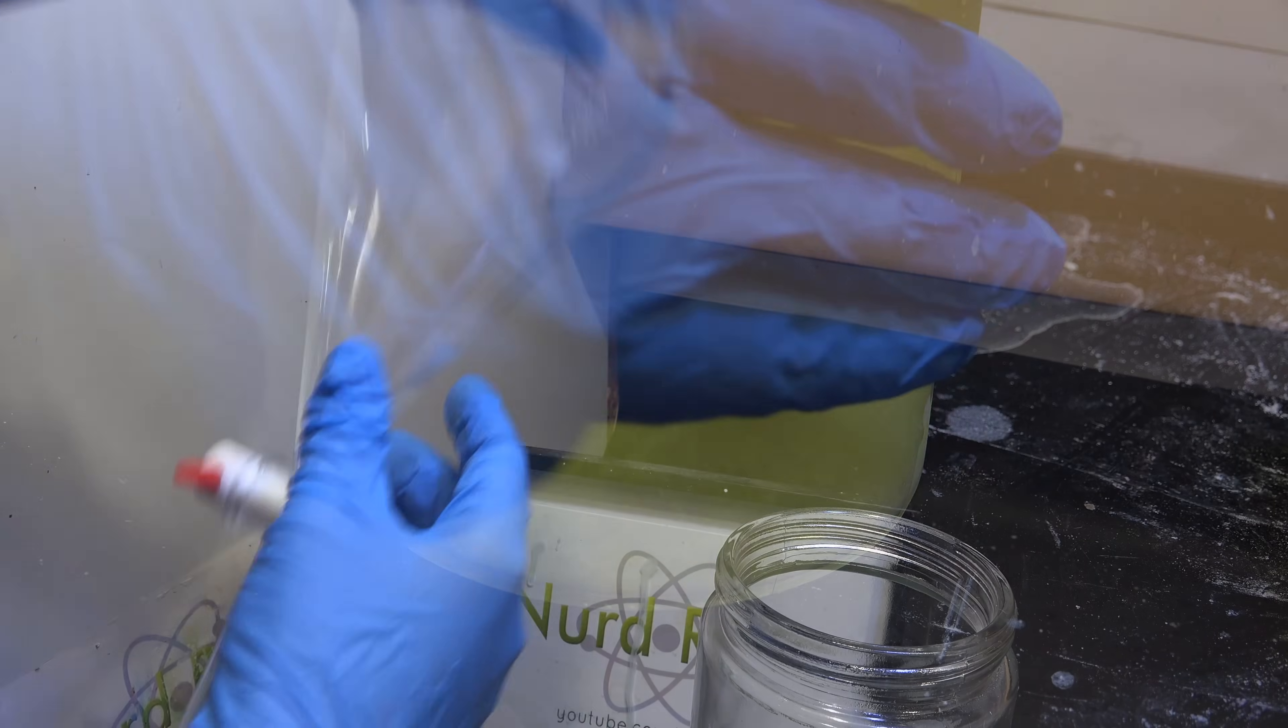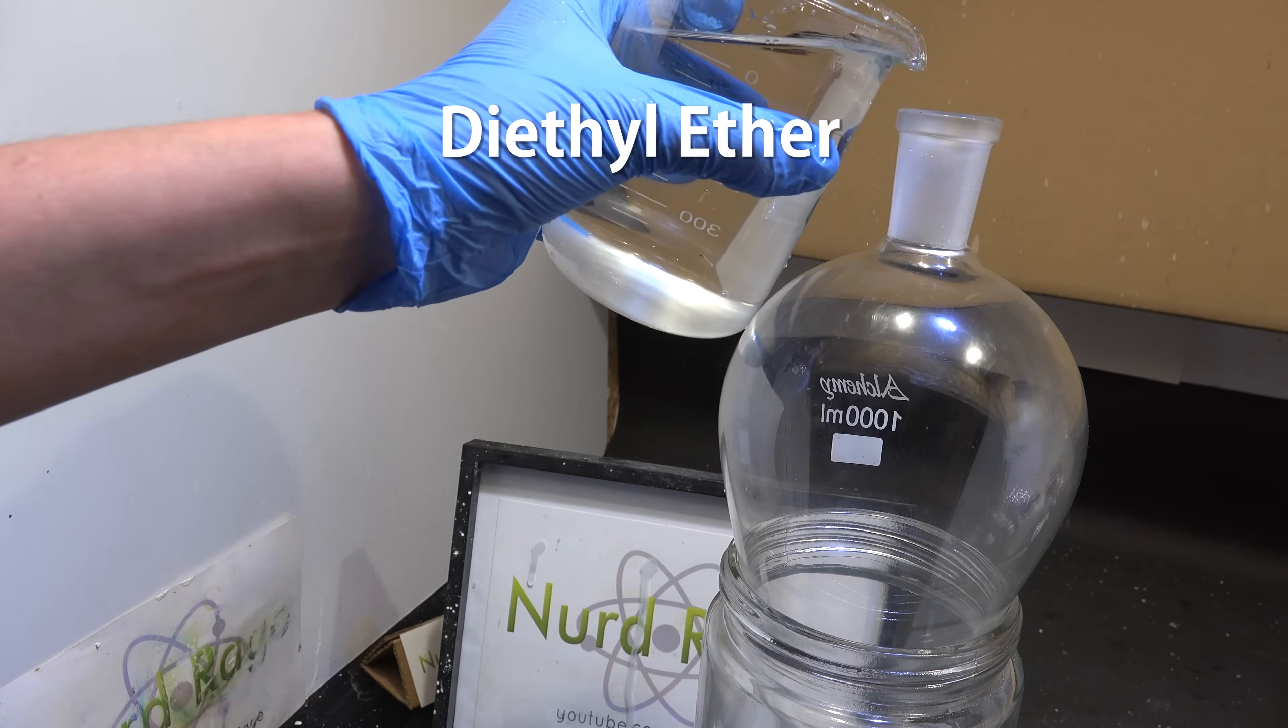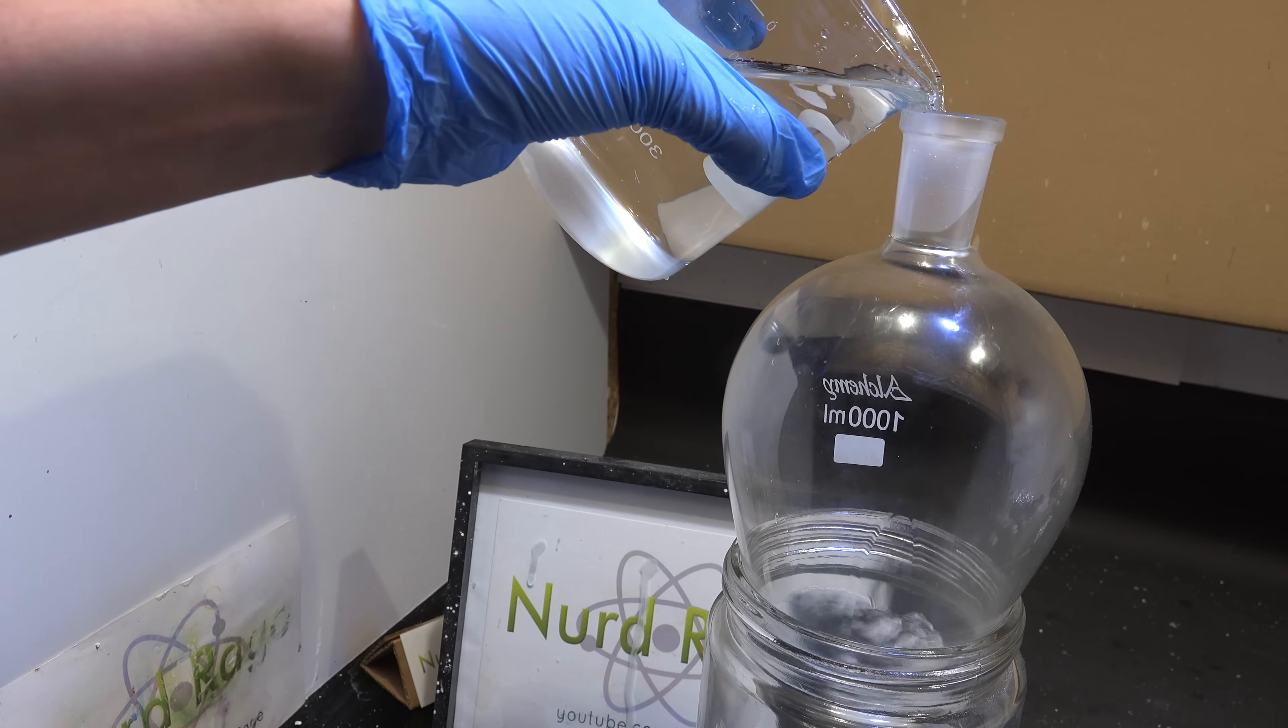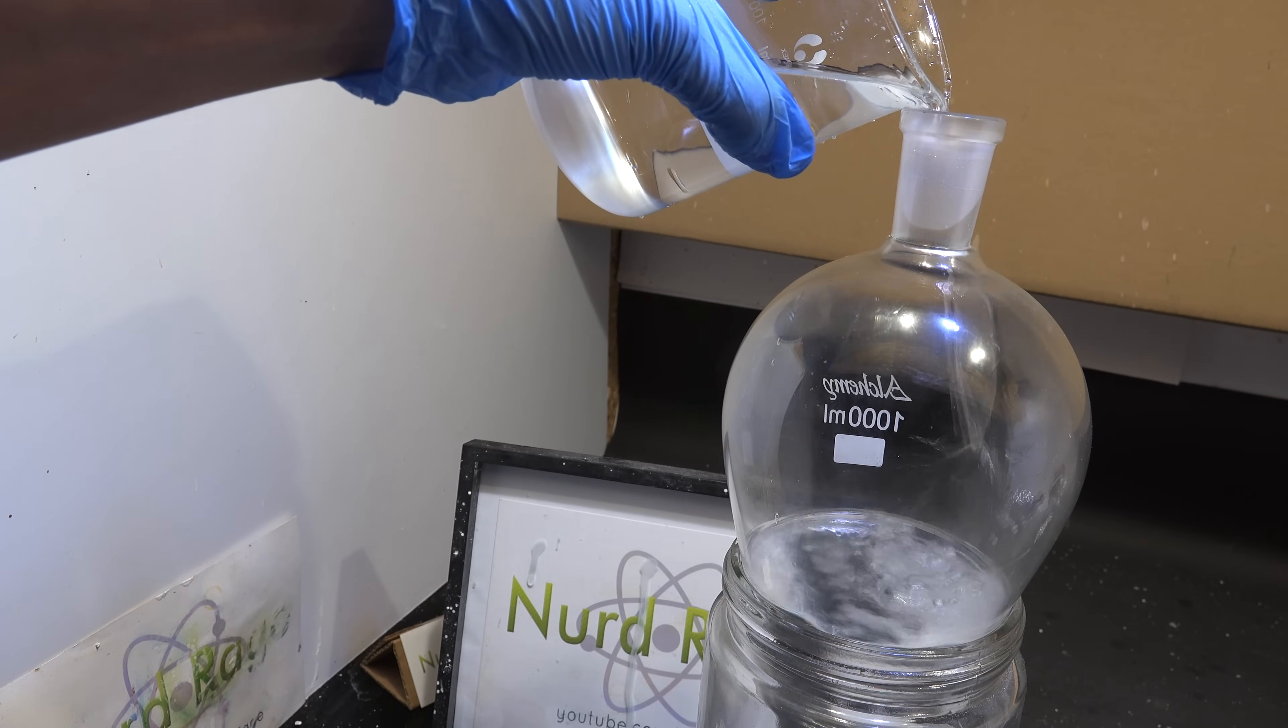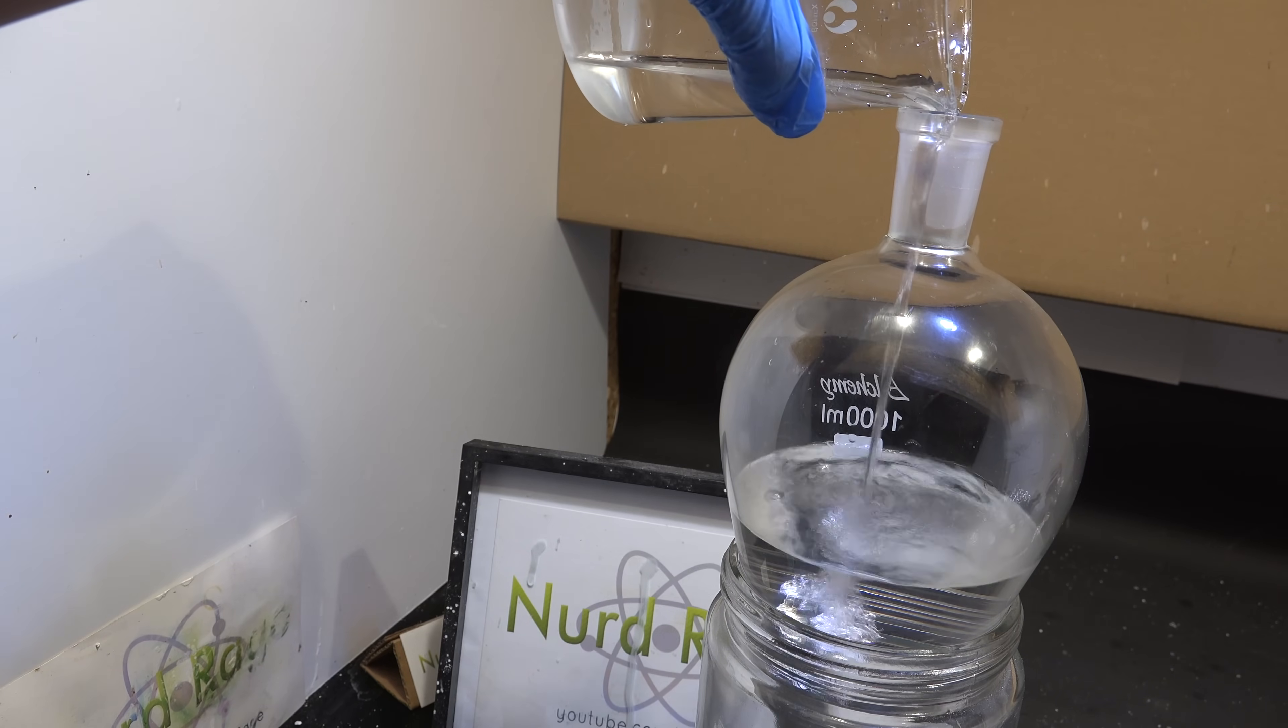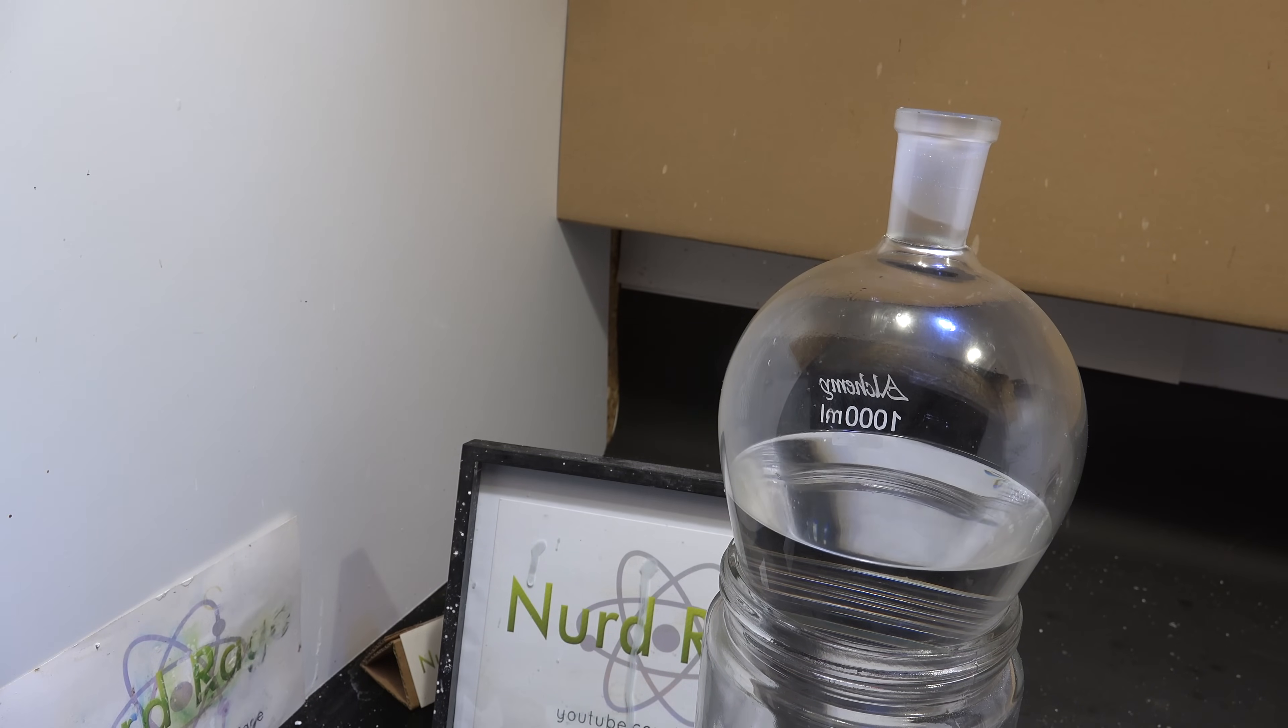Now you're going to need a large separatory funnel. We fill it halfway, in my case 500mL, with diethyl ether. I got most of mine distilling it off starter fluid as shown in a previous video. Diethyl ether has a low boiling point of just 34.6 degrees celsius so on a hot day like today you can lose a lot just from evaporation. It's also a tremendous fire hazard being so volatile and flammable. So when doing extractions it's a good idea to pre-chill it in the fridge if you can. This helps to keep the vapors under control.